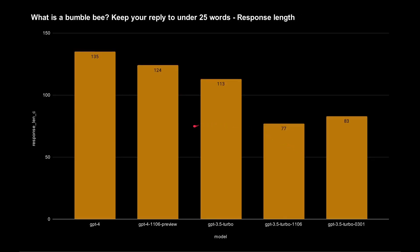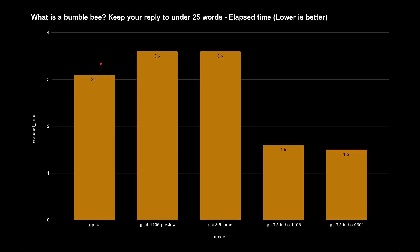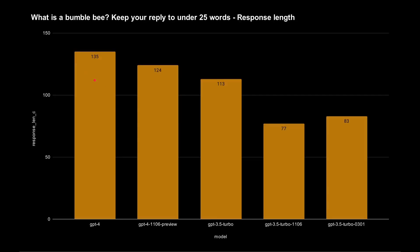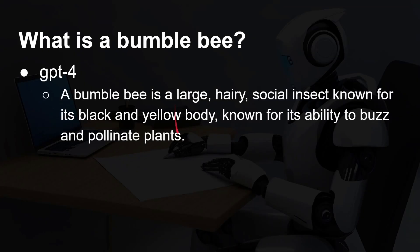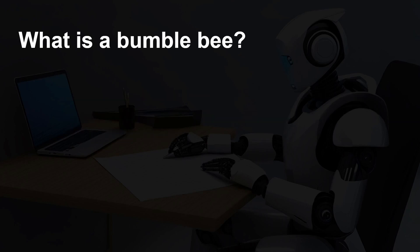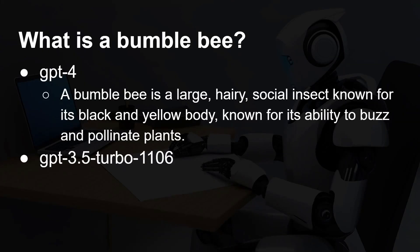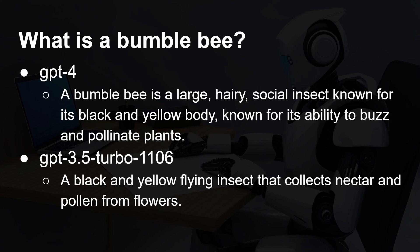Looking at the character counts: 135 characters for GPT 4, 124, then 113, and down to around 77–83 for the other models. GPT 4 gave a longer reply — 'a bumblebee is a large, hairy, social insect known for its black and yellow body and its ability to buzz and pollinate plants' — taking 3.1 seconds. GPT 3.5 Turbo 1106 replied: 'a black and yellow flying insect that collects nectar and pollen from flowers' — half the length and half the time.